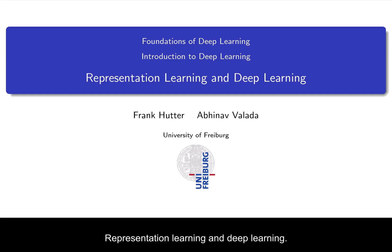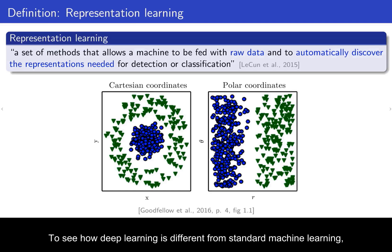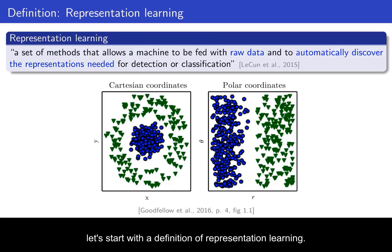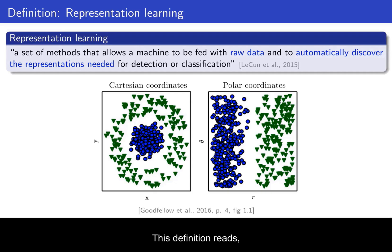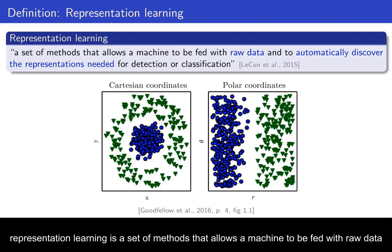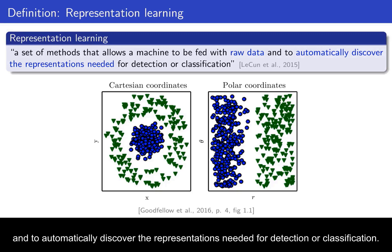Representation learning and deep learning. To see how deep learning is different from standard machine learning, let's start with the definition of representation learning. I like this definition by Jan LeCun, Joshua Bengio, and Jeff Hinton in their 2015 Nature paper on deep learning. This definition reads: representation learning is a set of methods that allows a machine to be fed with raw data and to automatically discover the representations needed for detection or classification.